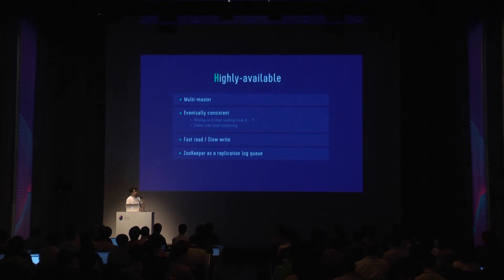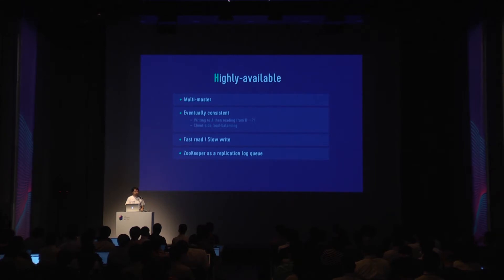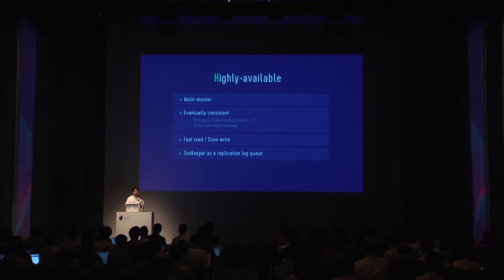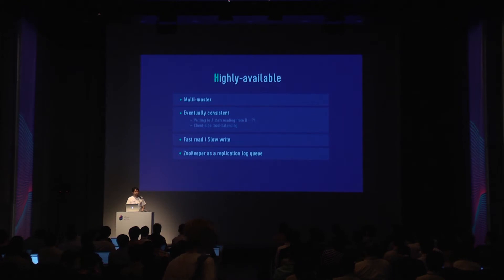Now let me explain how Central Dogma ensures high availability. It employs a multi-master architecture so that a client can write to any of the available replicas. It's not a master-slave architecture — multi-master is more robust when a certain replica goes down. Therefore it's possible to update the settings of your application even when all replicas but one are down, and the clients will automatically connect to an available replica.